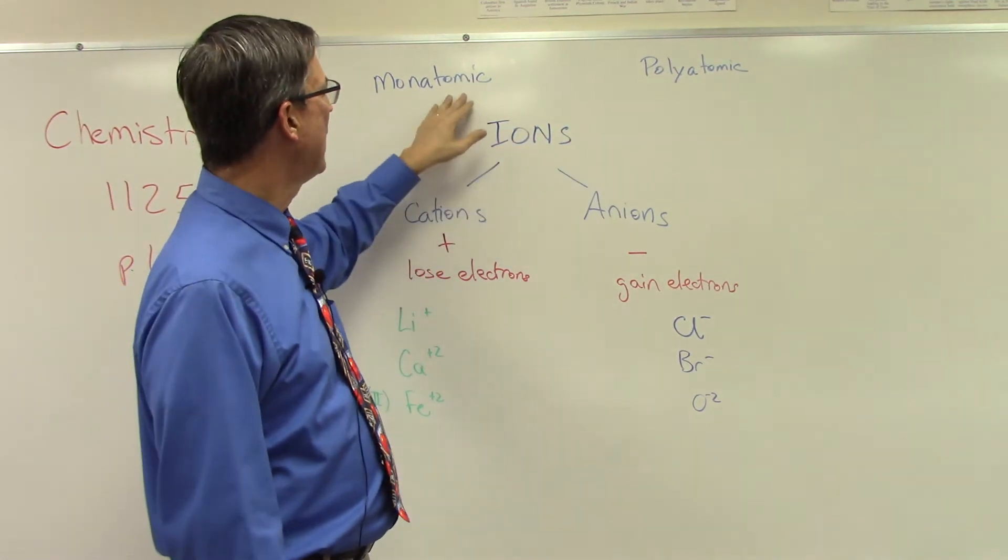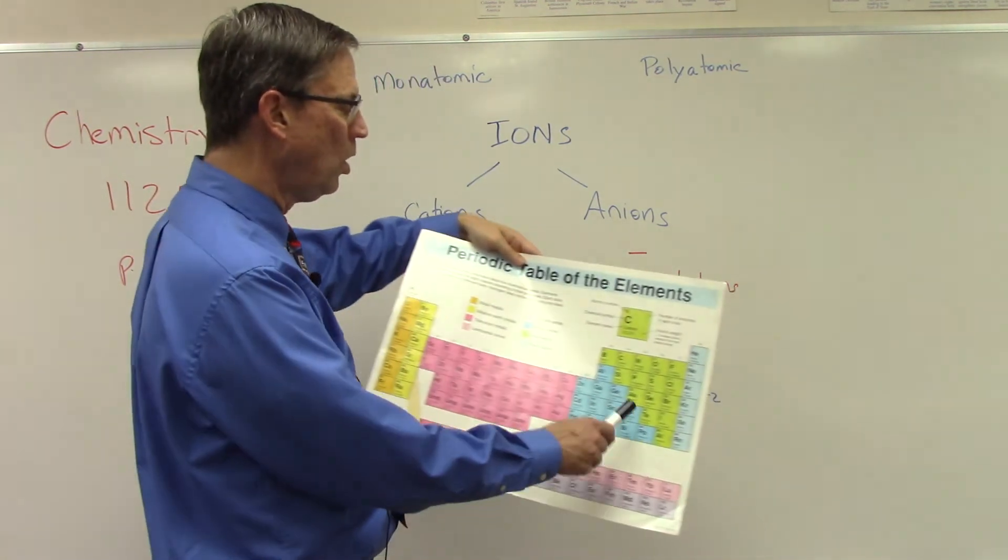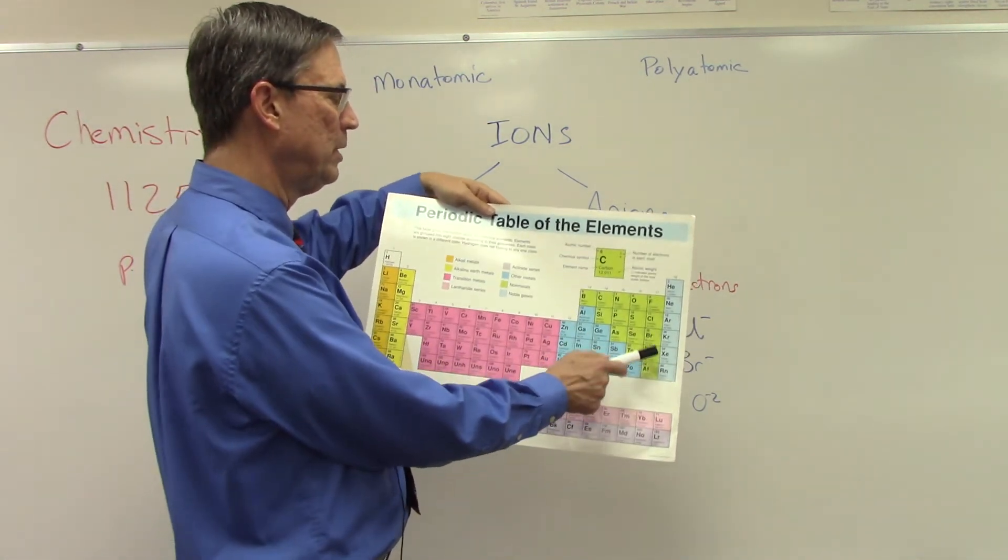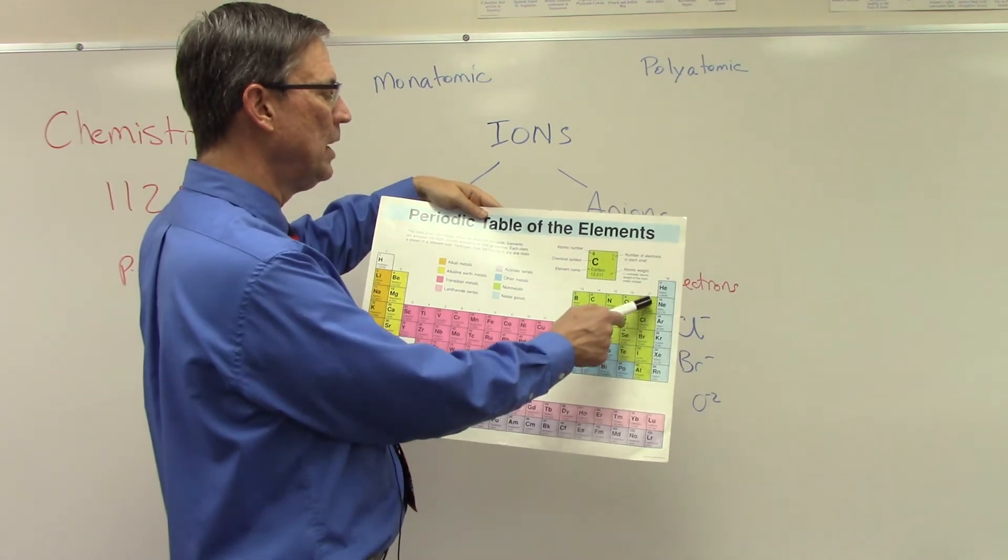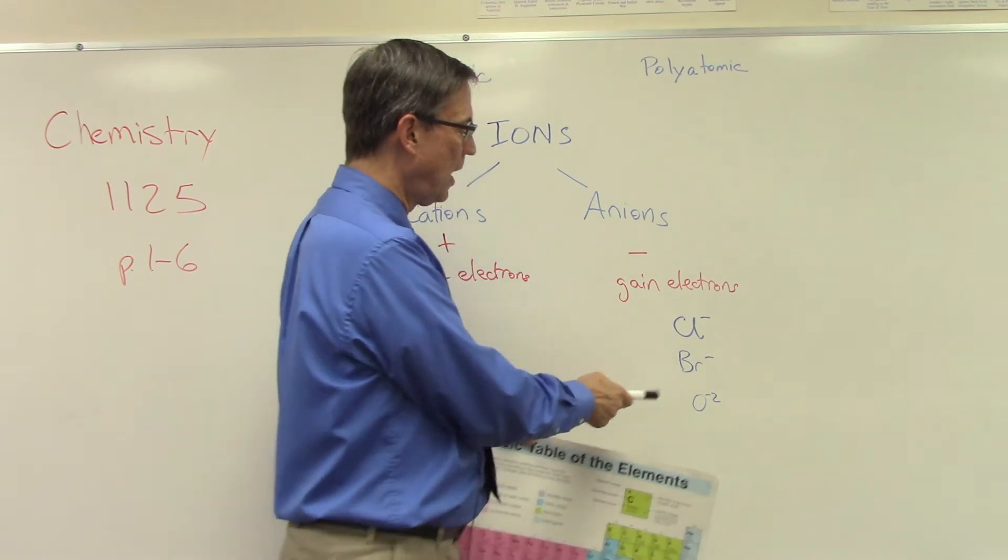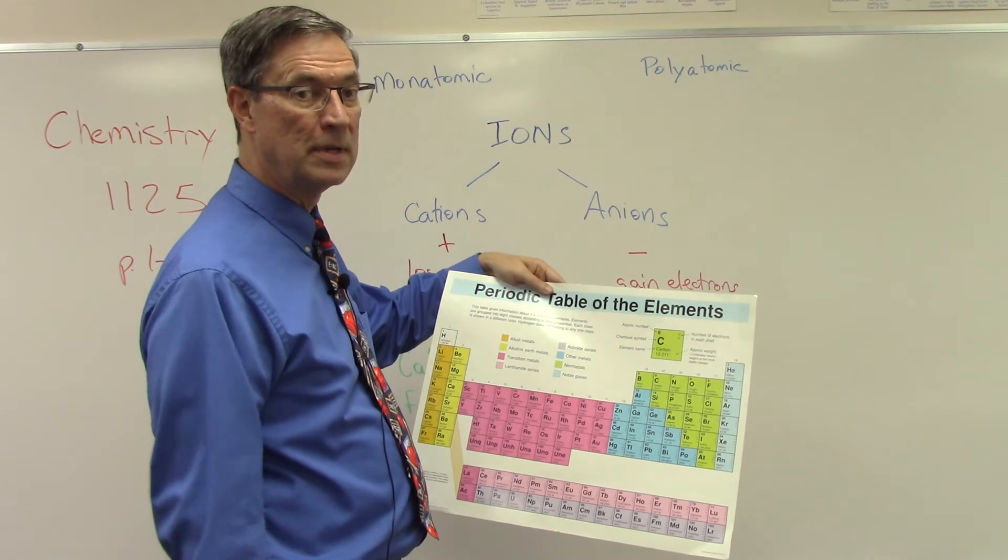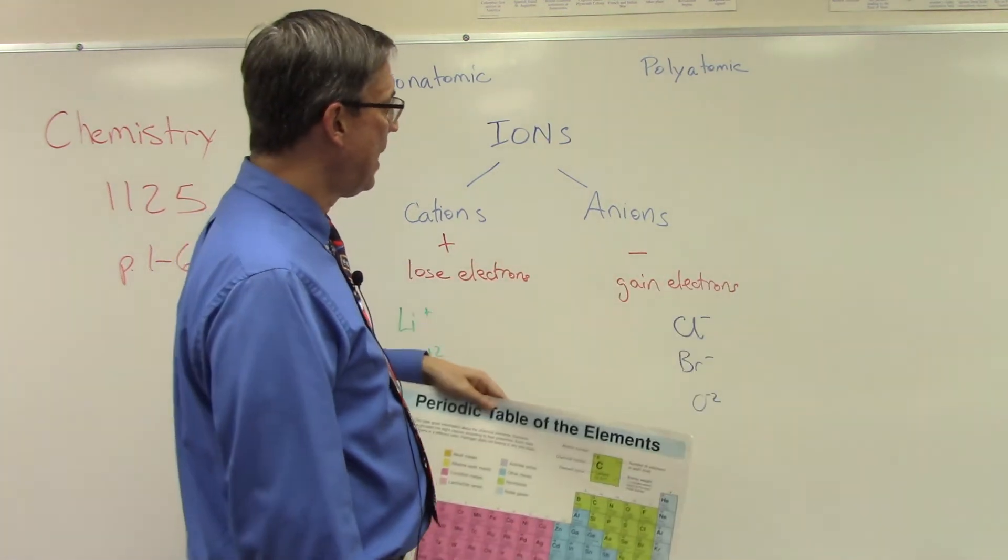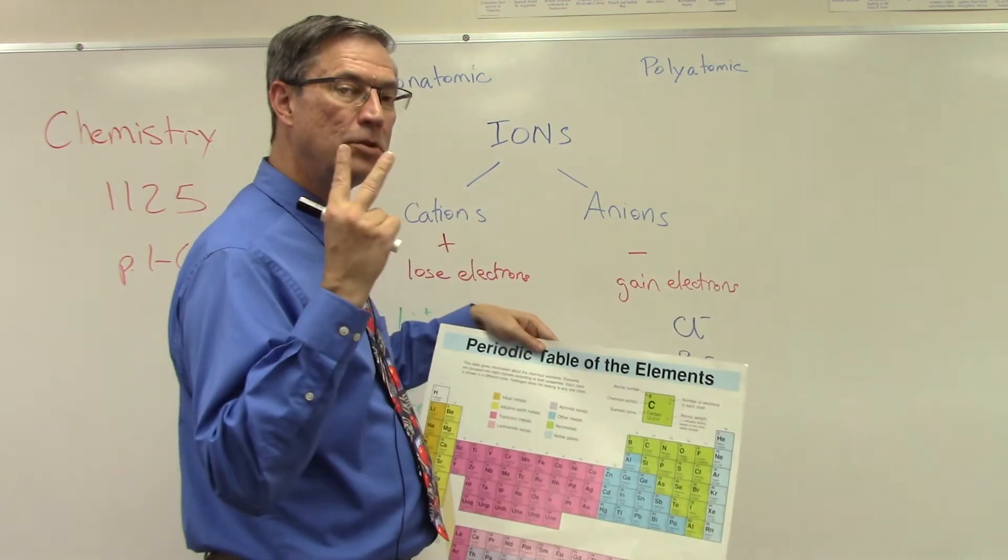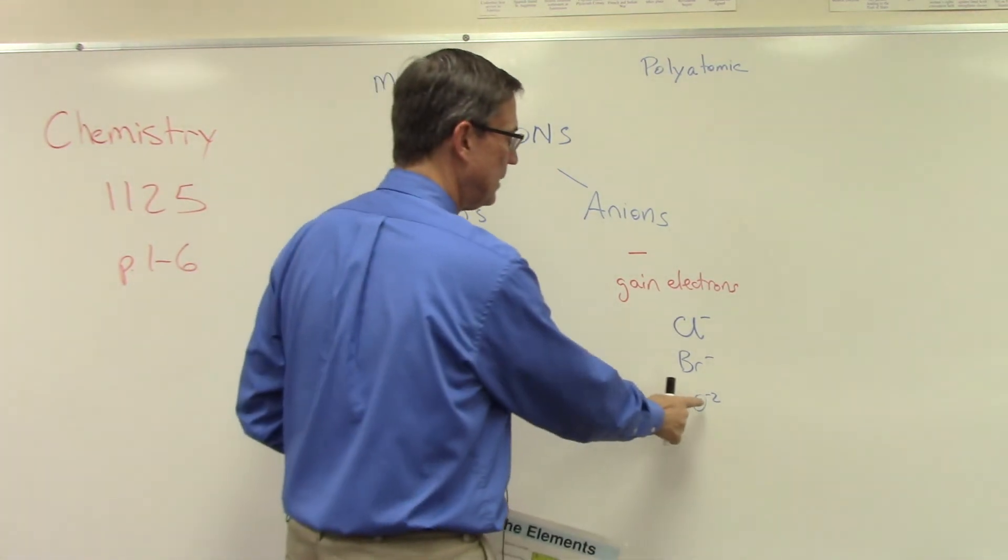So all of these elements over here, these non-metals, especially fluorine, chlorine, bromine, they like to gain one electron so they like to become anions. I have chlorine and bromine listed here. Chlorine, bromine, they like to gain one, negative one. And oxygen and sulfur are both in this family right here. They like to gain two electrons which means they have two more electrons than the protons, so they have a negative two charge.